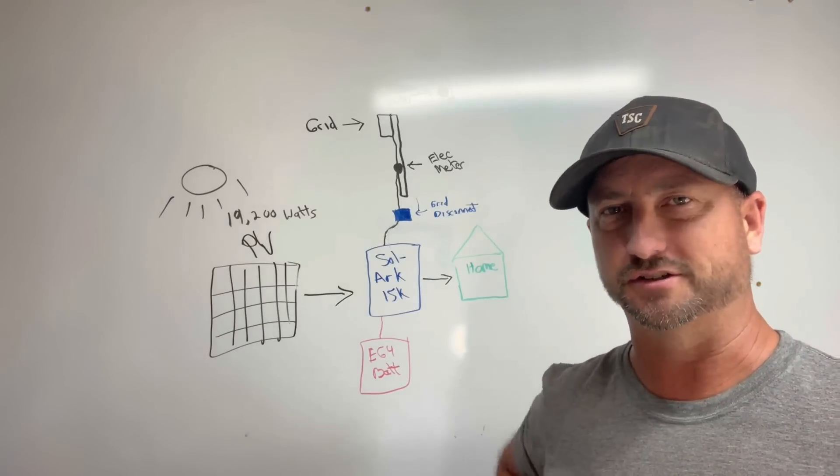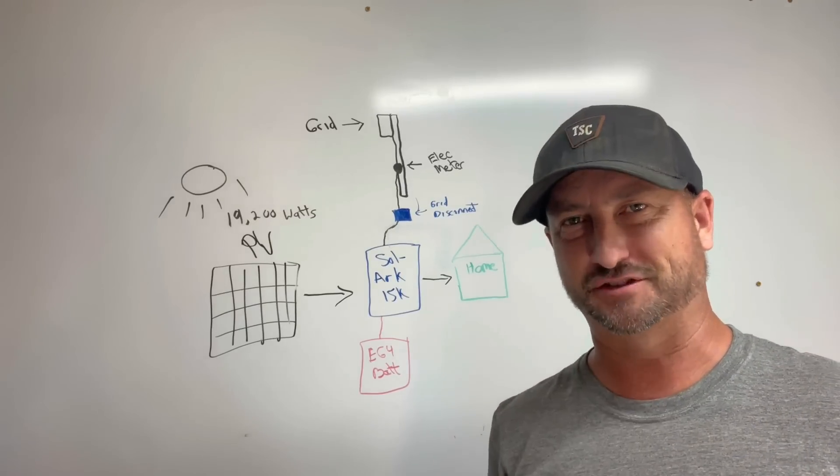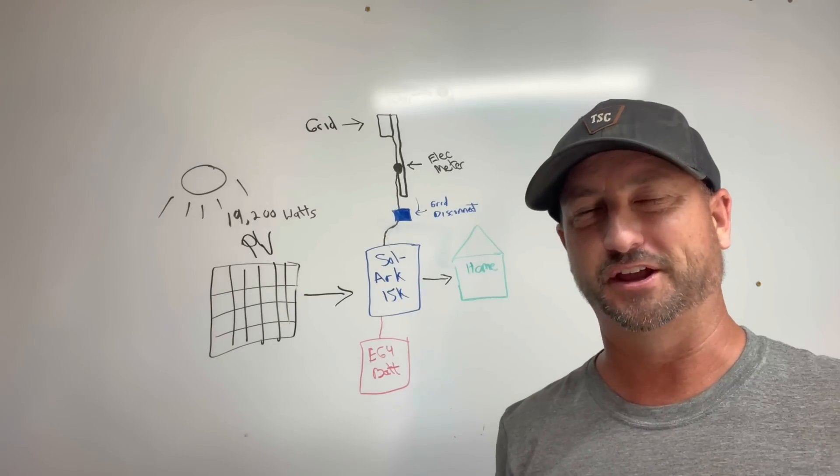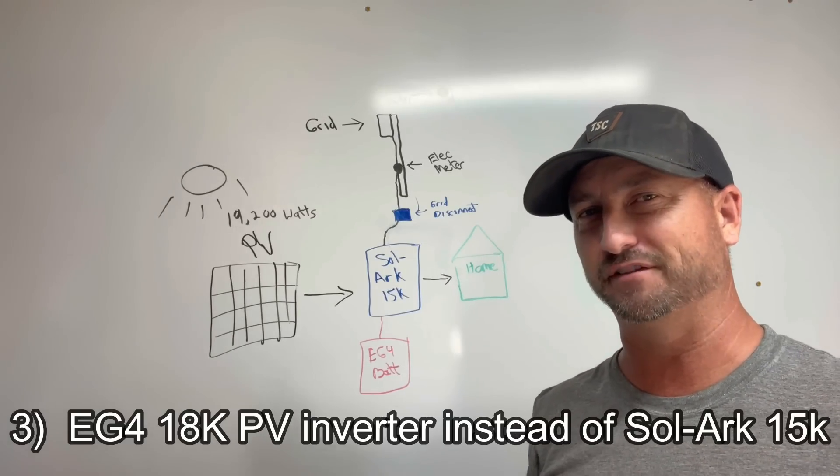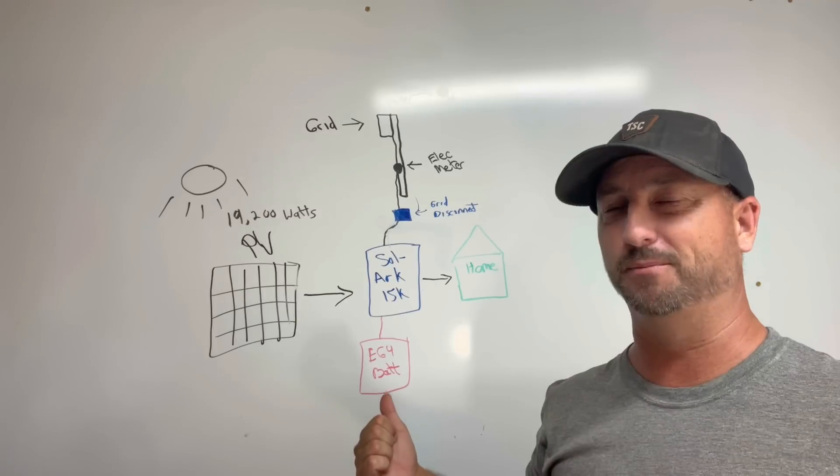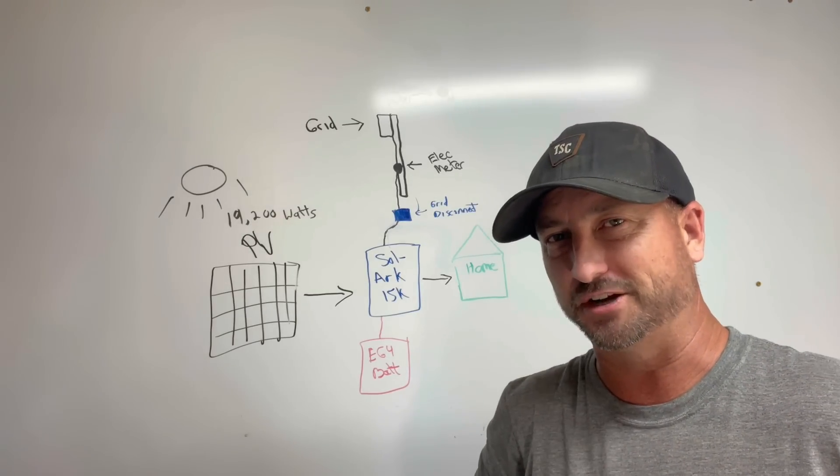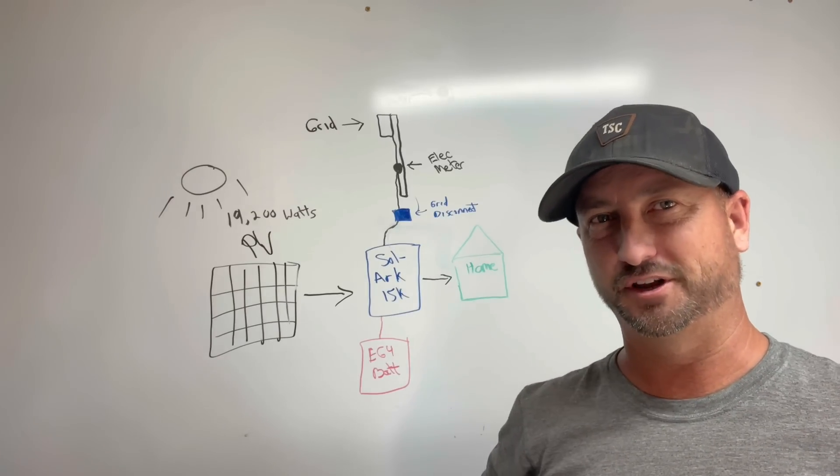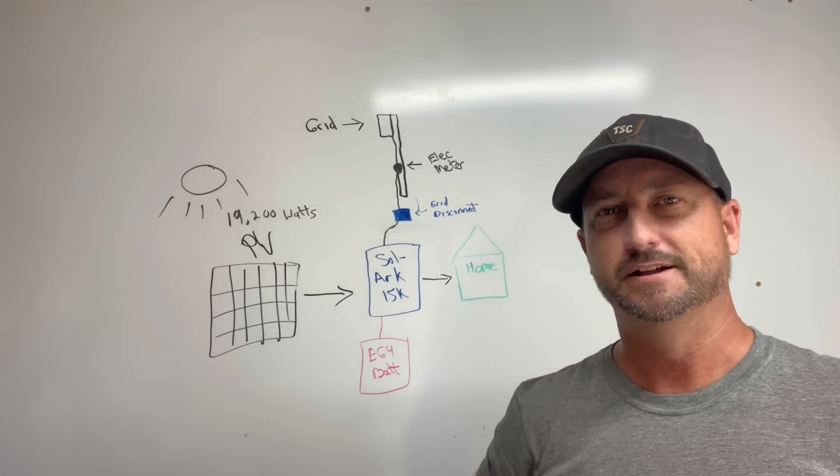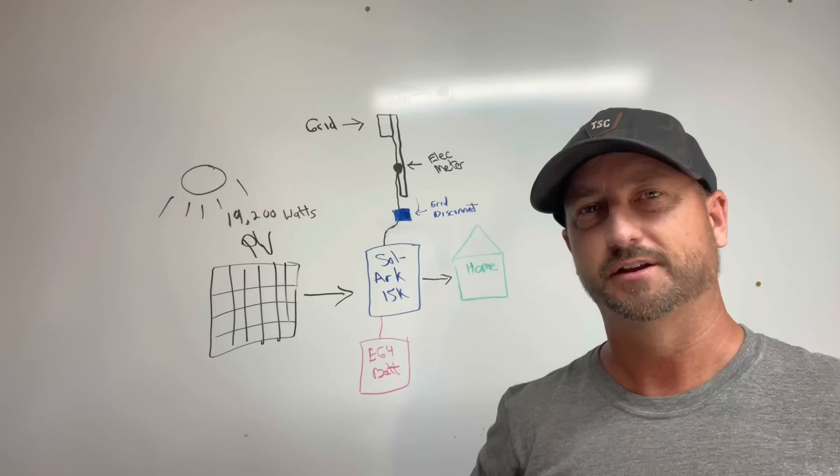Now the third thing that I may have done different, and I get a lot of emails from you all about whether you should go with the EG4 18k PV inverter over the Solark. The EG4 18k PV inverter is almost a mirror image of the Solark 15k but a couple thousand dollars cheaper. So the question is if I had to do it all over again would I use the EG4 inverter over the Solark 15k? That's a tough question for me. It's really a coin flip.